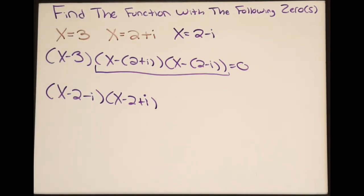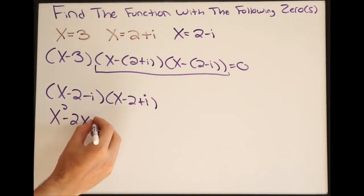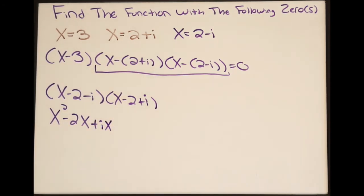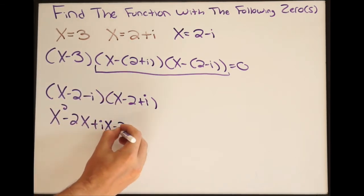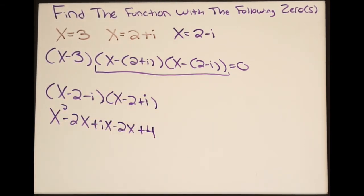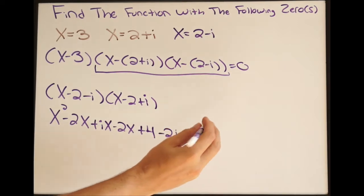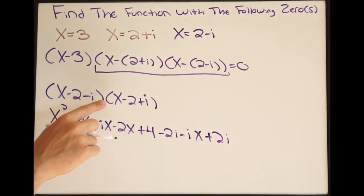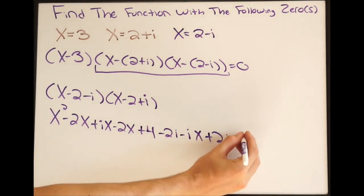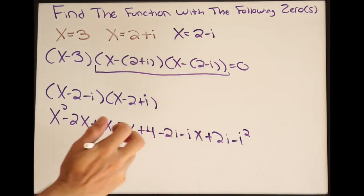Now we can expand it out by multiplying. Starting with our first term: x times x is x squared, x times negative 2 is negative 2x, x times i is positive ix. Moving to our second term: negative 2 times x is negative 2x, negative 2 times negative 2 is positive 4, negative 2 times i is negative 2i. For our last term: negative i times x is negative ix, negative i times negative 2 is positive 2i, and negative i times i is negative i squared. We can see that positive ix and negative ix cancel, and negative 2i and positive 2i cancel.